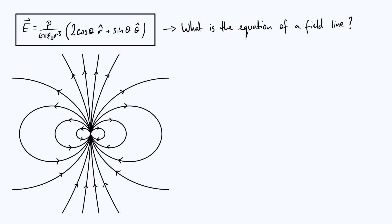First, let's think about what an electric field line actually is. Essentially it's just a line which always points in the direction of the electric field at each point along that line. To put it another way, if we look at any point along an electric field line, the electric field vector at that point is a tangent to that field line, and that fact is what we're going to use as the basis of our method for finding the equation of a field line.